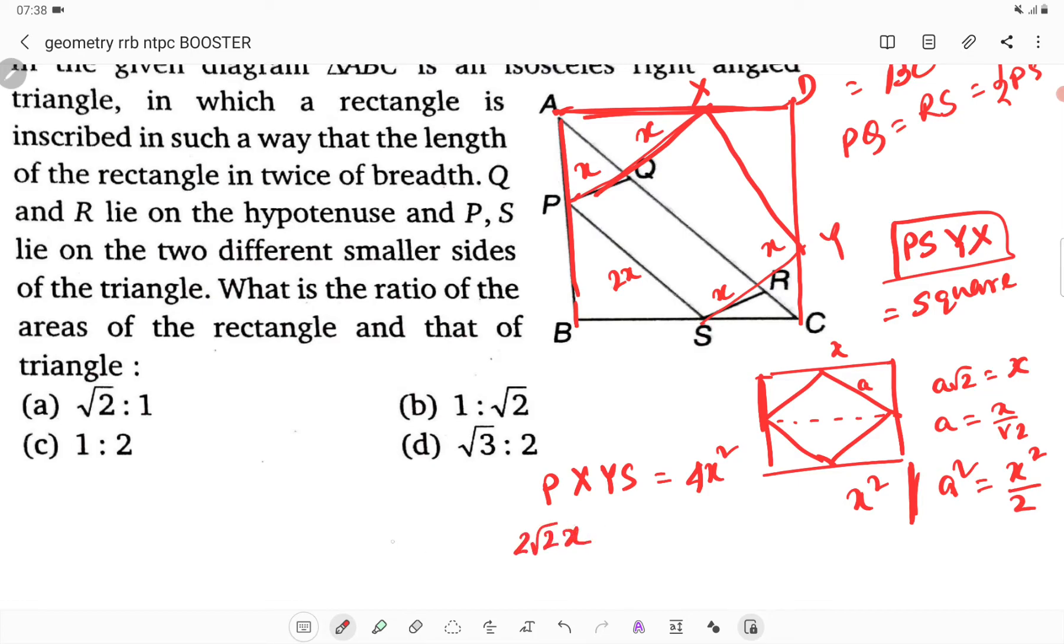So the outer area, that is ABCD area, becomes 2 root 2x all squared, which equals 4x squared times 2 equals 8x squared.